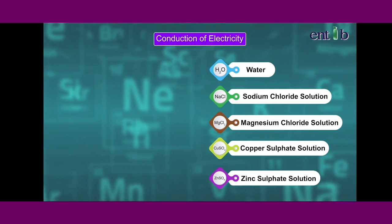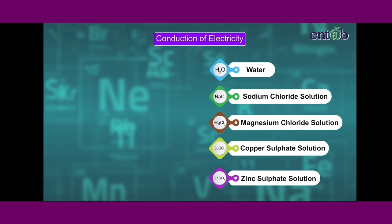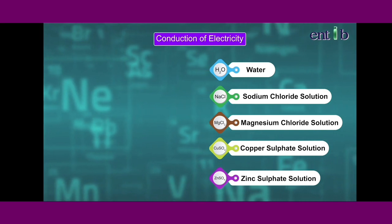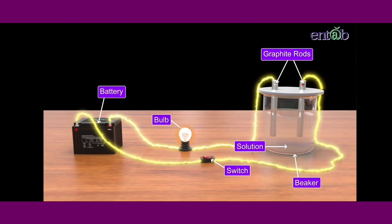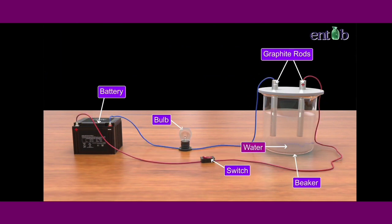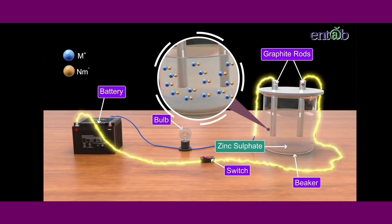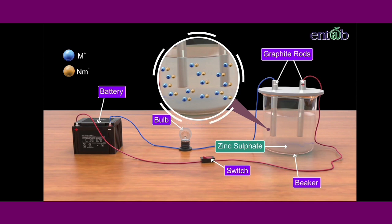Let us observe if water and some solutions conduct electricity. We shall do this through an activity, that is by passing an electric current through the solutions, namely water, solutions of sodium chloride, magnesium chloride, copper sulphate, and zinc sulphate.